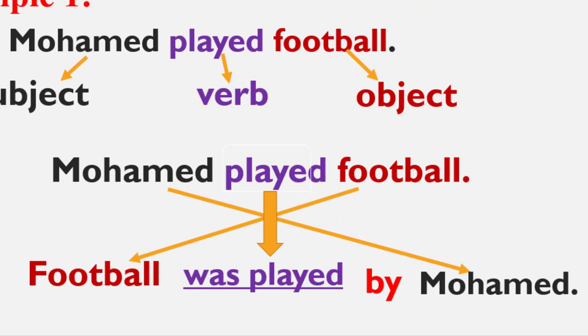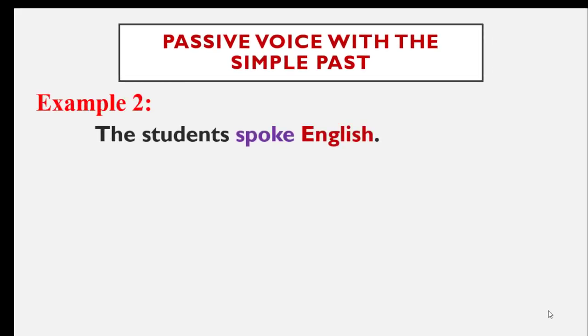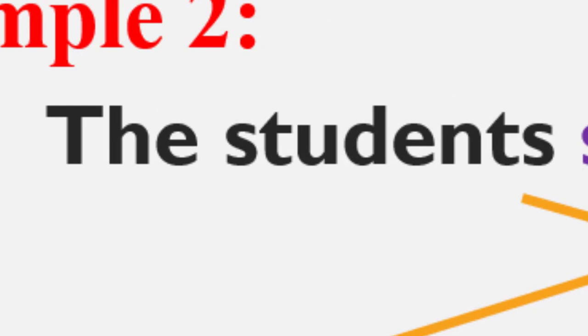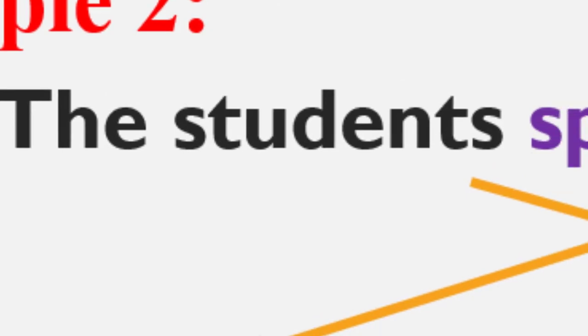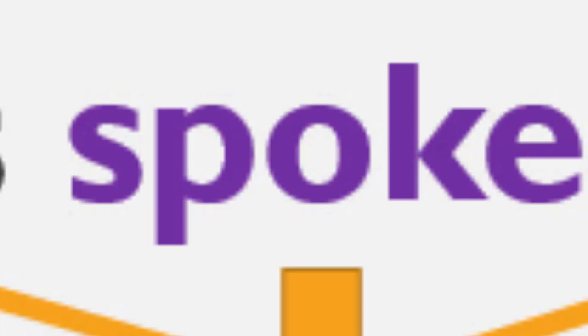Example number two: The students spoke English. English becomes the subject and the students become the object. Be careful with the past participle of speak, which is spoken. The verb is in the past, so verb to be must be in the past as well. The final answer is: English was spoken by the students.